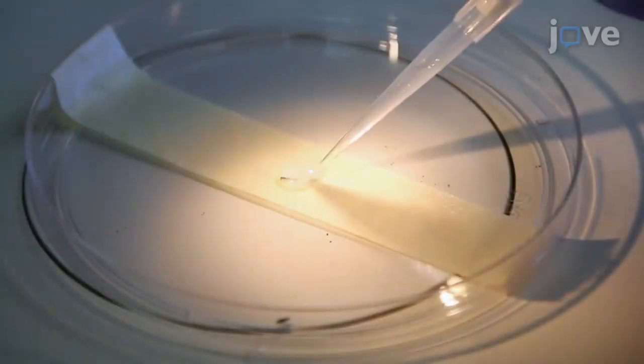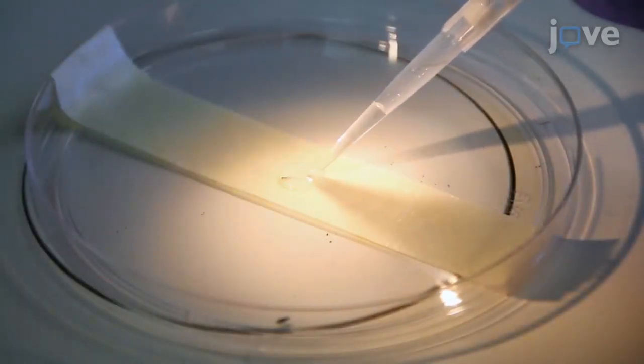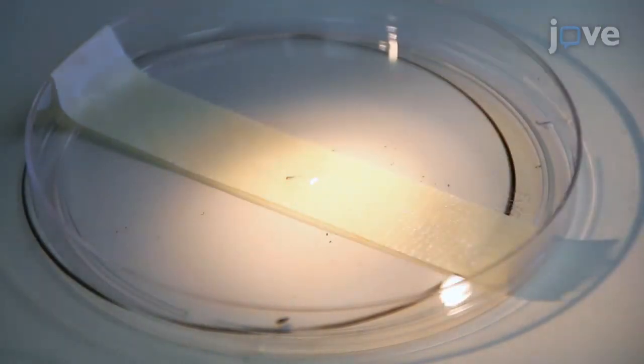Remove excess tricaine solution surrounding the larvae. The area should be as dry as possible to successfully section and pick up the fin, but still wet enough to ensure survival.